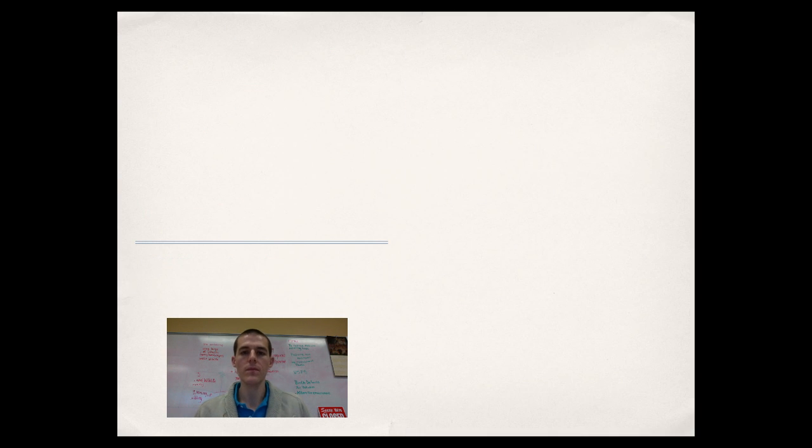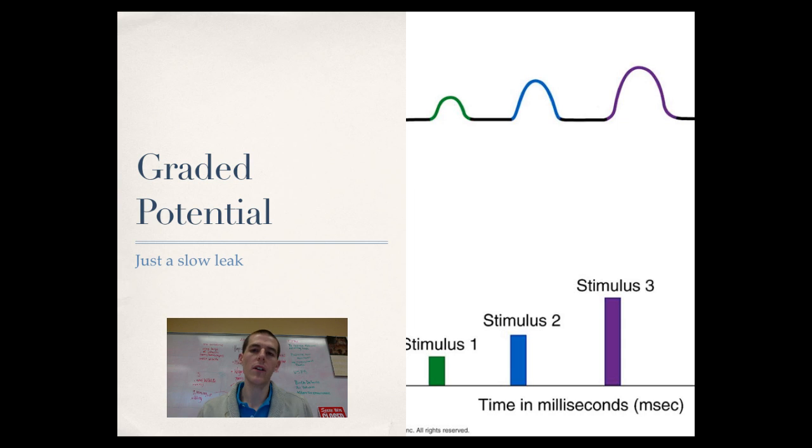Let's talk about graded potentials. A graded potential is kind of like a slow electrical leak. This is going to be a stimulus that causes a graded response. So a small stimulus causes a small response, medium stimulus causes a bigger response, and large stimulus causes the largest response. The response is proportional to the stimulus. We'll find out with action potentials that's not the case at all.